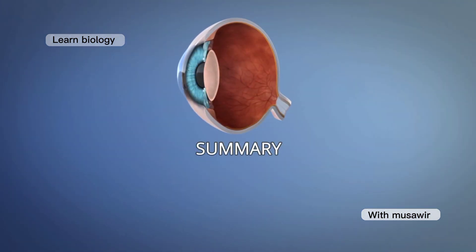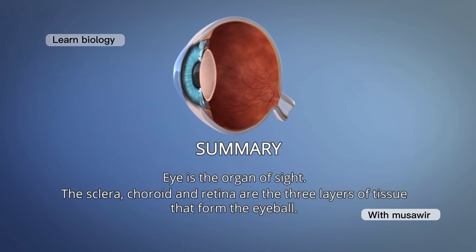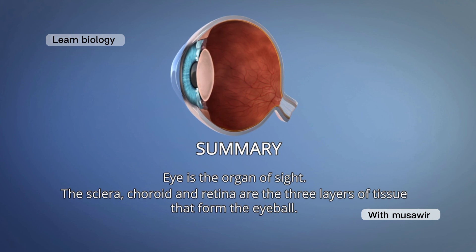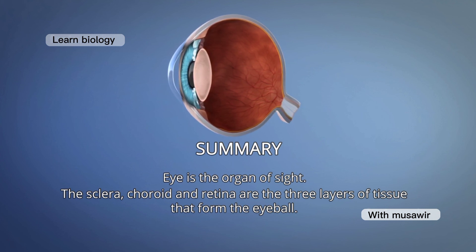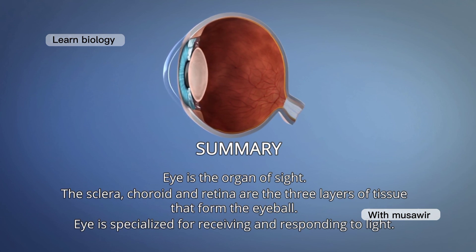Summary: the eye is the organ of sight. The sclera, choroid, and retina are the three layers of tissue that form the eyeball. The eye is specialized for receiving and responding to light.